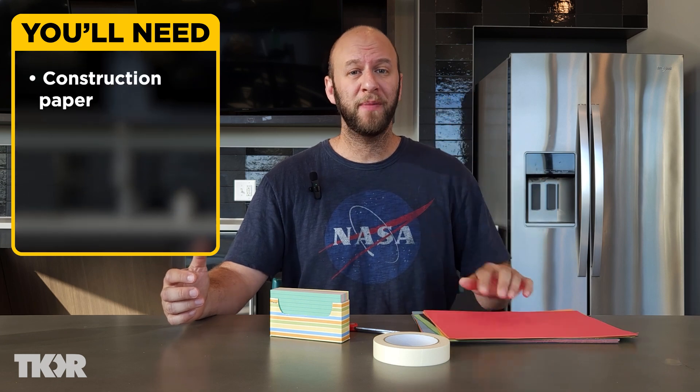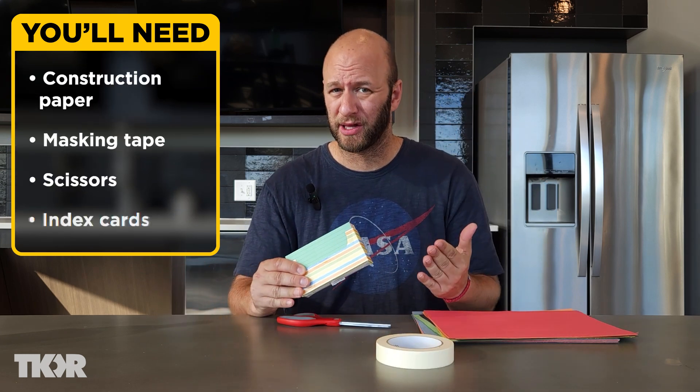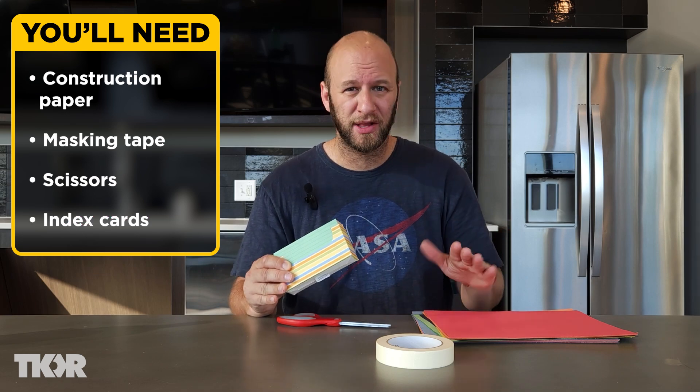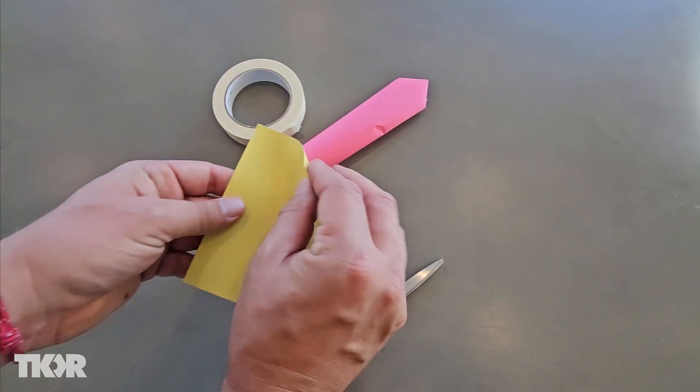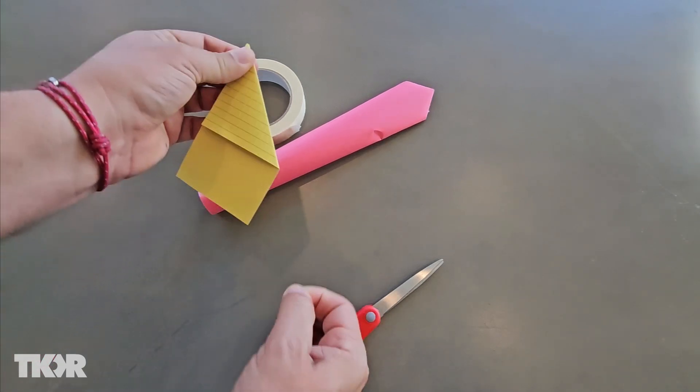To build our rocket, we're going to need the following supplies: construction paper, masking tape, scissors, and I like to use index cards. If you don't have any of these handy, it's okay, you can just use construction paper. You also want to make sure that you have your launcher handy because we're going to need it to help build our fuselage.